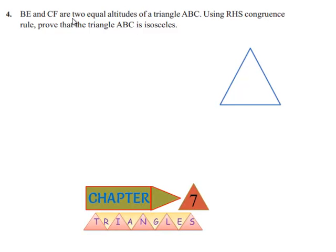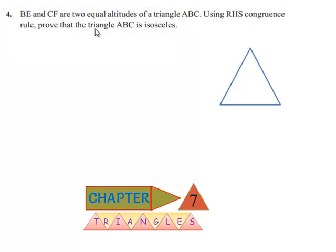Moving on to the fourth question: BE and CF are two equal altitudes of triangle ABC. Using the RHS congruence rule, prove that triangle ABC is isosceles.